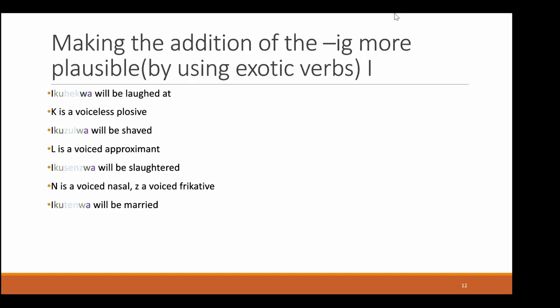And of course, here are more examples in which the IG is not used, so we can better understand what cases prevent IG from being added. We have 'ikuhekwa,' meaning 'will be laughed at' — K is the voiceless plosive. Then 'ikusulwa,' meaning 'will be shaved' — L being a voiced approximant. And 'ikusenswa,' meaning 'will be slaughtered' — N is the voiced nasal, Z is the voiced fricative. And 'ikutenwa,' meaning 'will be married.'